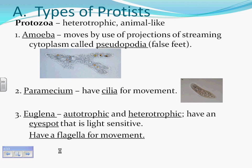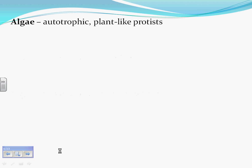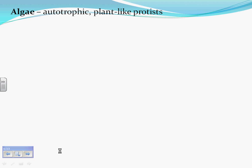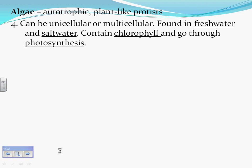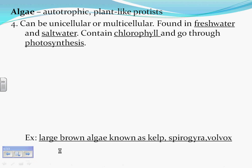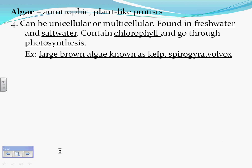Euglena are both autotrophic and heterotrophic, and they have an eye spot that is light sensitive, with a flagella for movement. Algae are autotrophic, plant-like protists. They can be unicellular or multicellular, found in freshwater and saltwater, contain chlorophyll and go through photosynthesis. Large brown algae known as kelp, spirogyra, and volvox are examples.